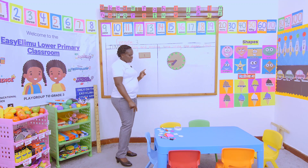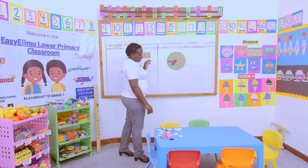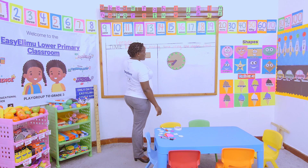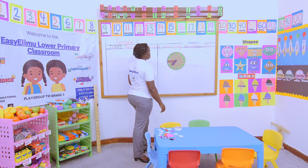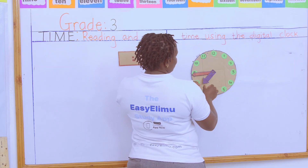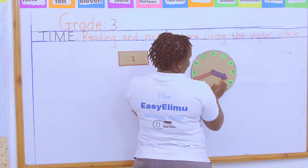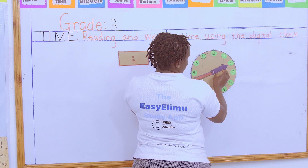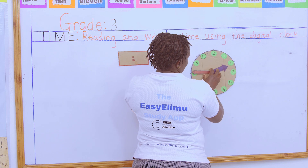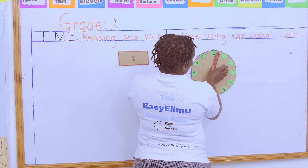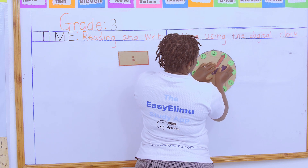So if I'm told, represent quarter past two on the analog clock face. How will I do it? My hour hand is two. And when you talk about quarter...